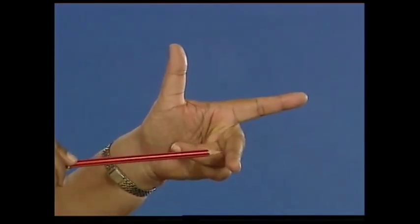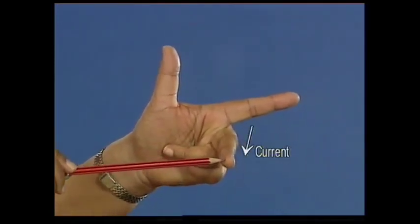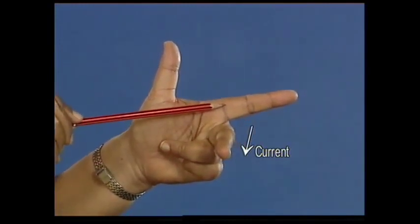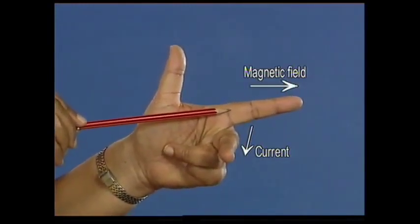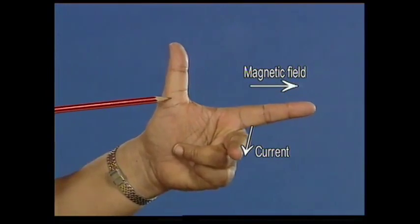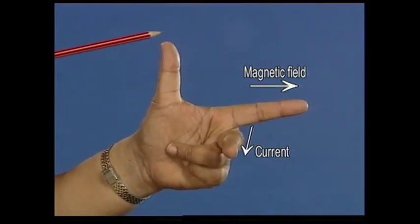If this finger shows the direction of current and this finger the direction of external field, the force on the wire would be given by the thumb.